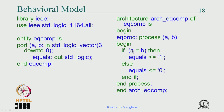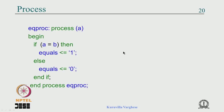We looked at the behavioural model where we use a sequential body called process. A process has a sensitivity list — we put the inputs there, and when anything changes it computes from top to bottom once, using sequential statements like if-then and case-when. Variables and constants can be declared before the begin. There is a problem if you miss something in the sensitivity list: here there are two inputs, but if you do not write both inputs, the simulator will give behaviour the synthesis tool cannot produce.